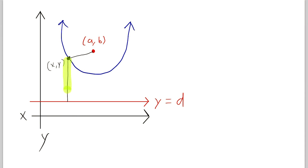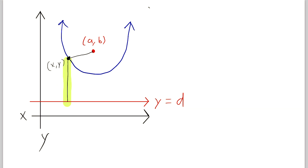We need an equation of the form: the length of this line segment equals the length of that line segment. This first one is pretty easy — the length of that is just the change in y from the directrix up to this point, because there is no change in the x coordinate. So it's just the vertical change. The length of that line segment is y minus d. That's the vertical change from the point to the directrix. So we've got y minus d equals the length of the second line segment.